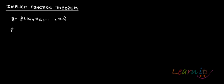But supposedly the function is defined implicitly — that is, the function is a function of y and also of x1, x2, and so on to xn. This is an implicit function. You cannot explicitly take y or x out from this function. So how do you partially differentiate this?